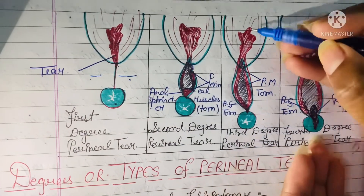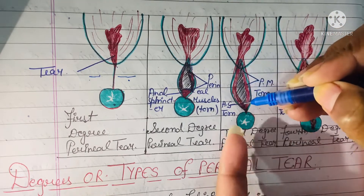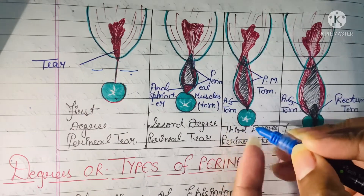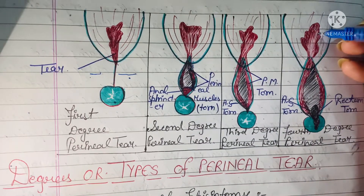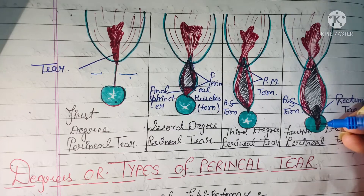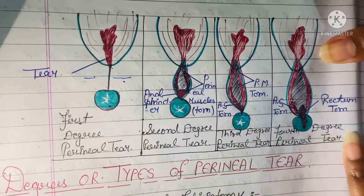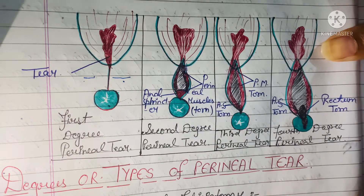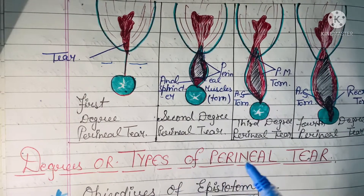In the third degree of perineal tear, there will be a tear involving the vagina, the perineal muscles, and also the anal sphincter, but there won't be any tear on the anus itself. In the fourth degree of perineal tear, there will be a tear on all portions of the perineum — including the vagina, perineal muscles, anal sphincter, and also the rectum, which is the internal portion of the anus. These are all the degrees or types of perineal tear.